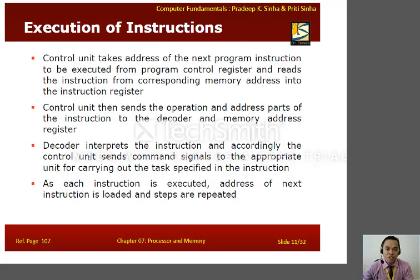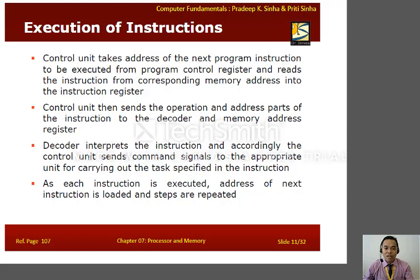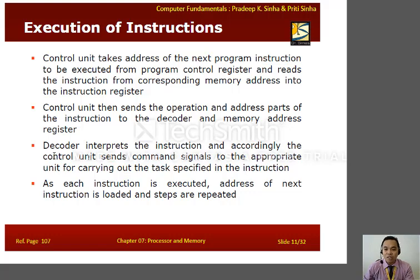The execution of an instruction follows this flow: the control unit takes the address of the next program instruction from the program control register and reads the instruction from the corresponding memory address into the instruction register. It then sends the operation and address parts of the instruction to the decoder and the memory address register. The decoder interprets the instruction, and accordingly the control unit sends command signals to the appropriate unit for carrying out the specified tasks. As each instruction is executed, the address of the next instruction is loaded and the steps are repeated.